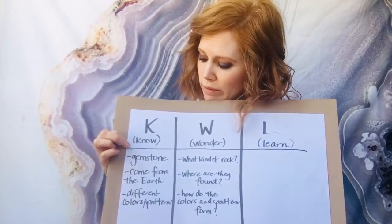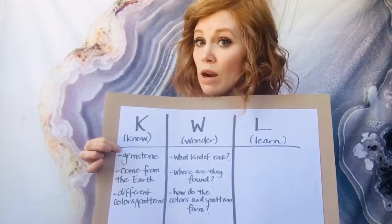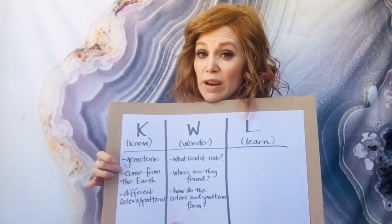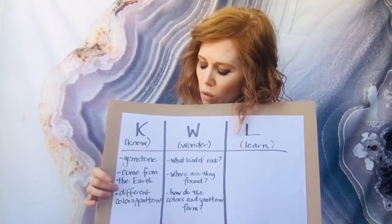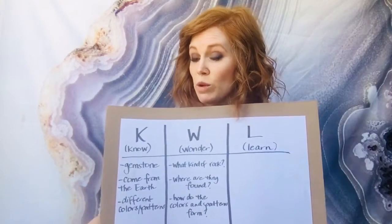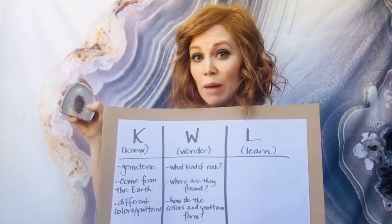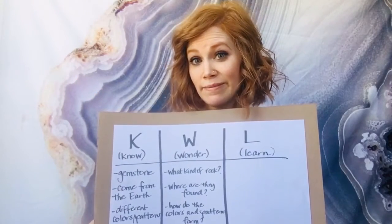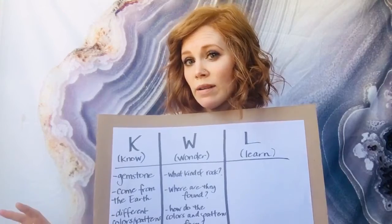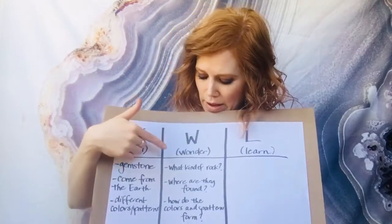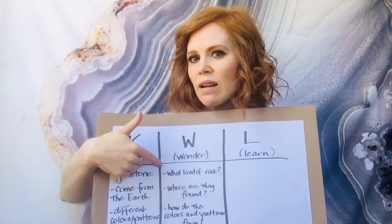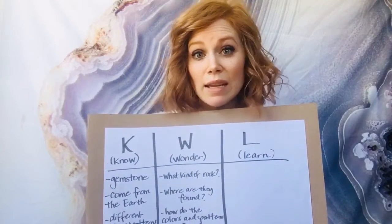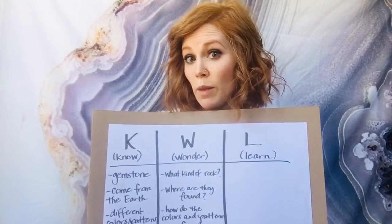I know that agates are gemstones. I know that they come from the earth — that they're natural. And I know from looking at them, from using my skills of direct observation, that they have different colors and patterns. Here's what I wonder, what I'm trying to find out: what kind of rock is an agate? You just studied rocks in science class, so you might know just from looking at it.